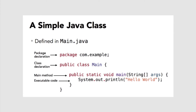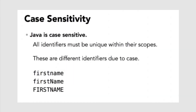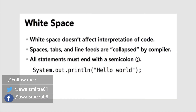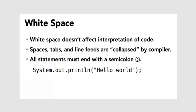The executable code is placed within the main method. The code is printing the string Hello World to the console, and it ends with a semicolon, which is like a period — it marks the end of a statement. Also in Java, white space doesn't affect how your code is interpreted. In some languages like Visual Basic, a line feed means the end of the statement, but in Java a line feed is just like a space and a tab character. All three types of characters are collapsed during compilation into a single bit of white space, and it's up to you to indicate where a statement ends with a semicolon character.